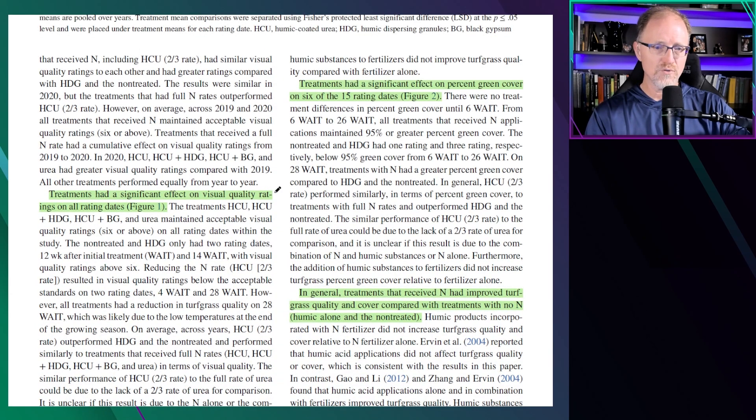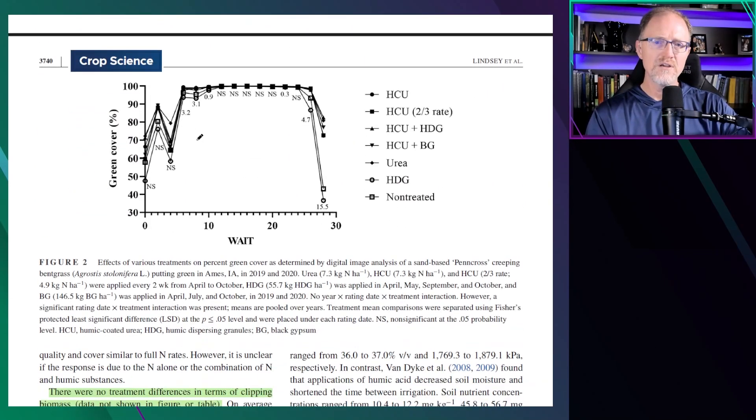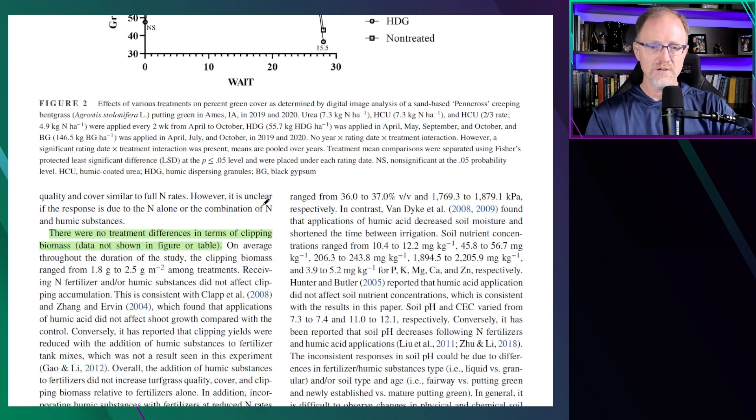Treatments had a significant effect on visual quality, but it was from the non-treated and the humic-dispersable granule. In general, treatments that received nitrogen had improved turfgrass quality and cover compared with treatments with no nitrogen or humic alone. The green cover, there wasn't much differences in green color except for at the very end. Whether it was from urea or from humic-coated urea, they were all the same. So there was really no benefit from applying humic-coated urea in terms of green color.